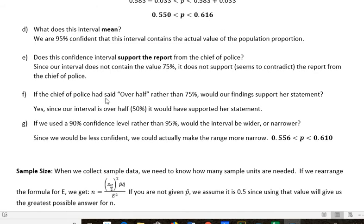If the chief of police had said over half of the citizens are not comfortable walking around the city instead of 75%, would our findings support her statement then? I think we probably could say over half. Since our interval is over half—half would be 50%—and we're over that, we might be able to say that if she had said that instead of going all 75% on us, we would be able to support that.